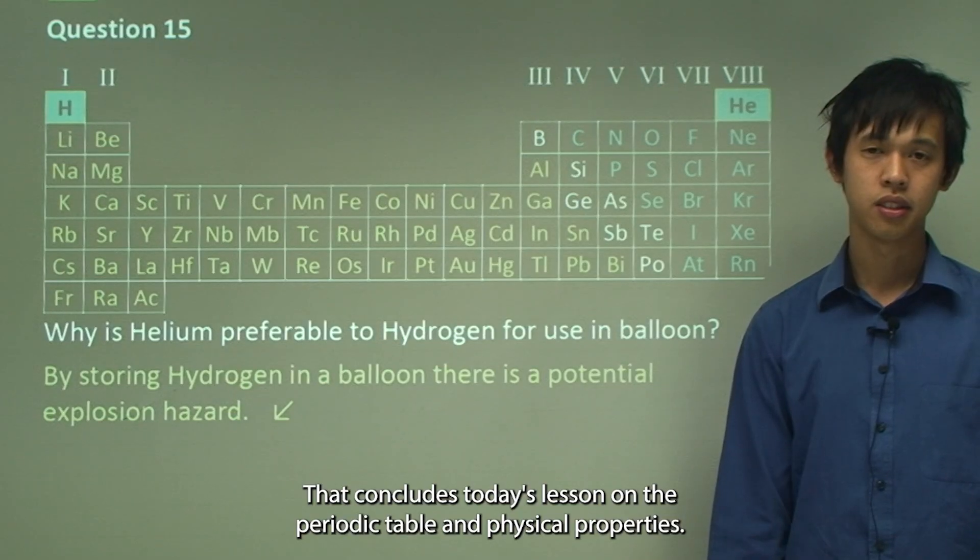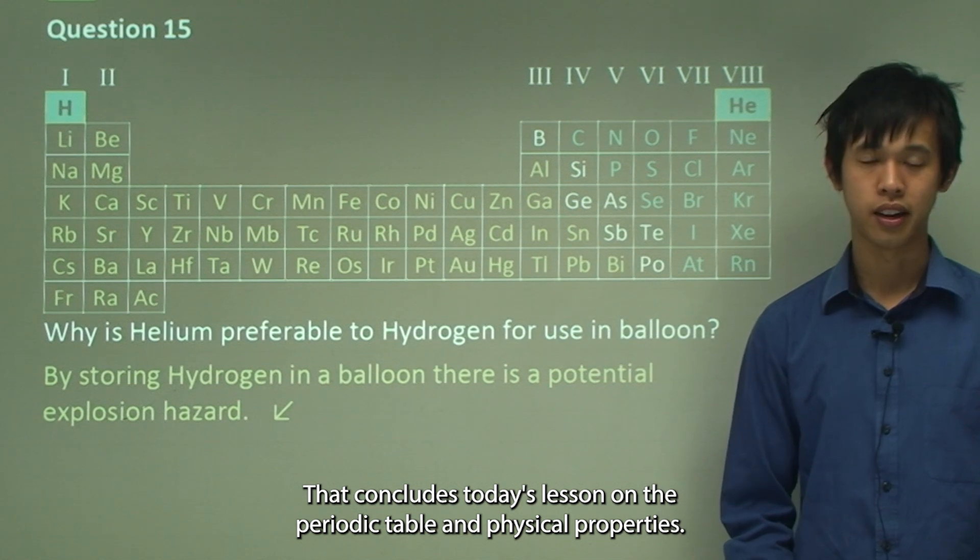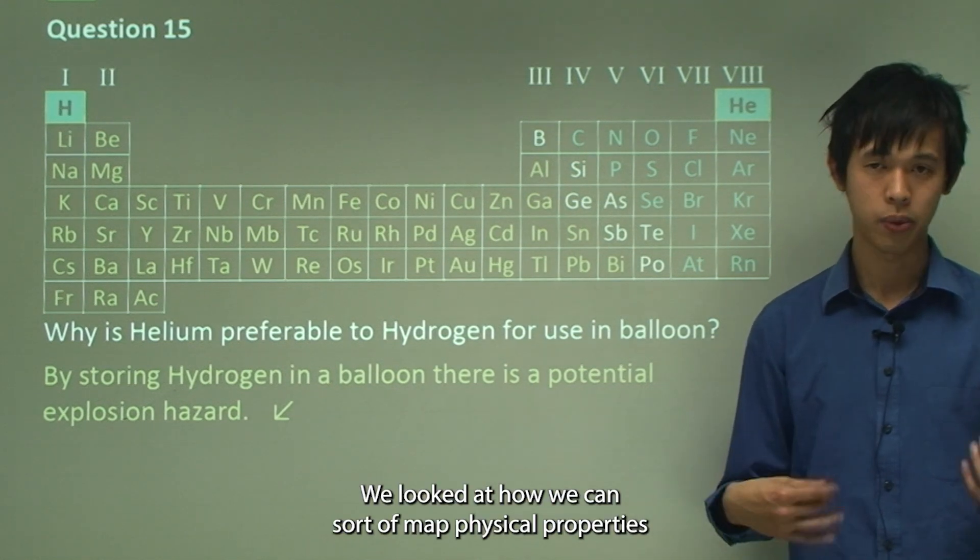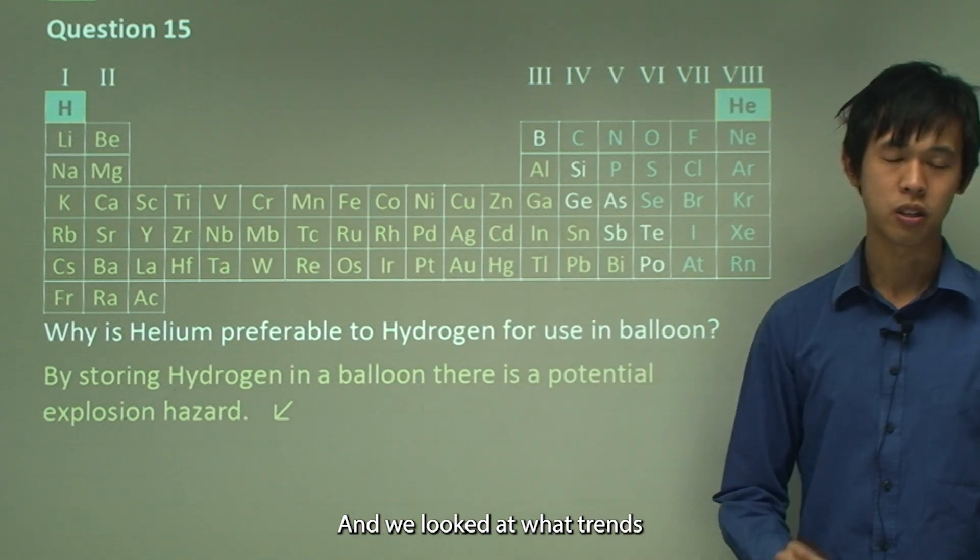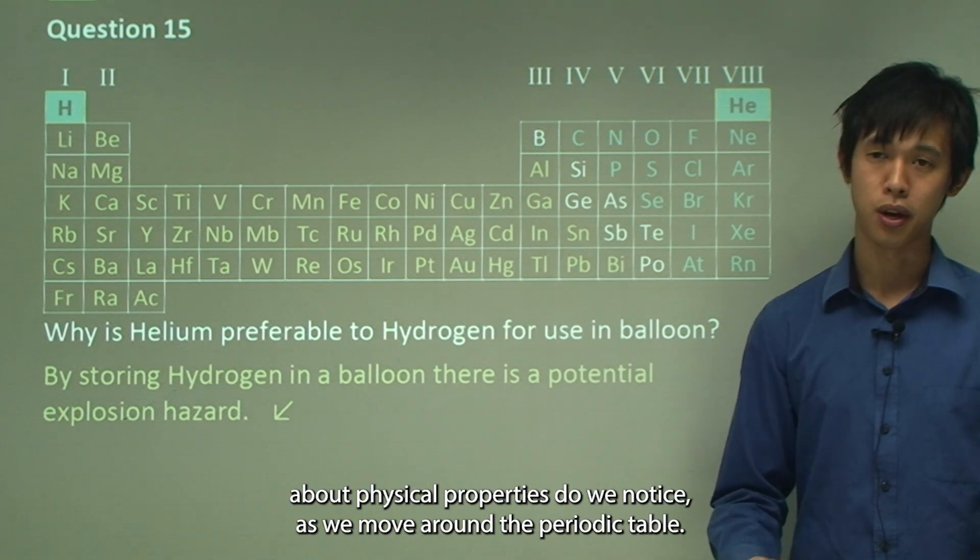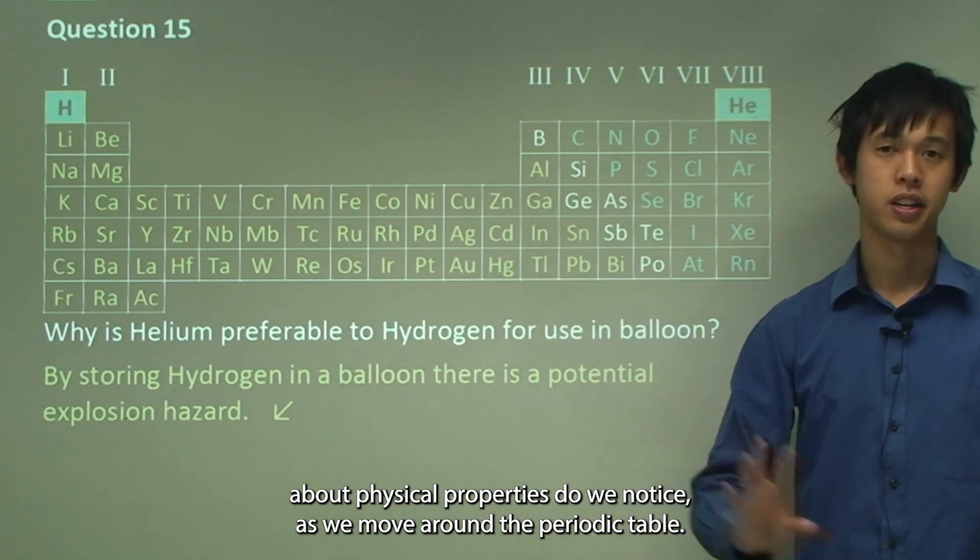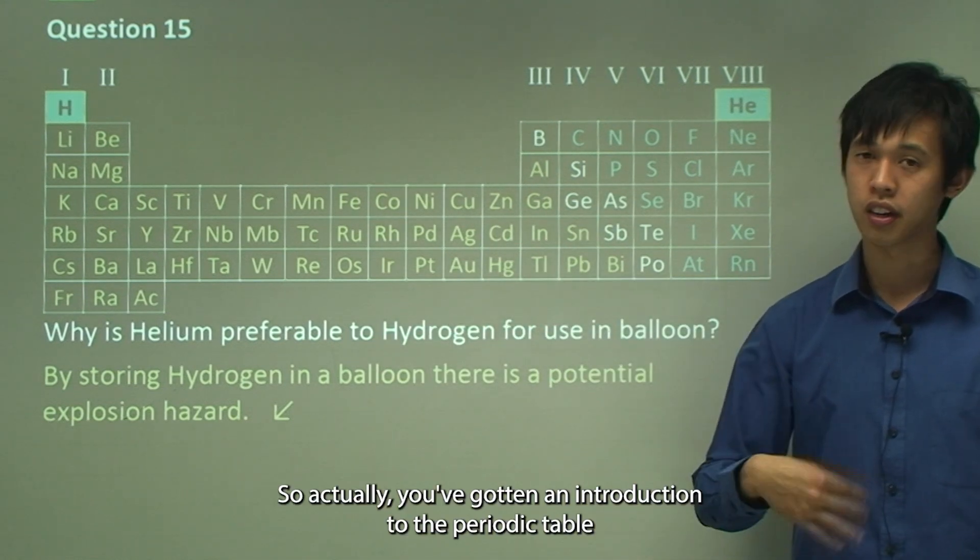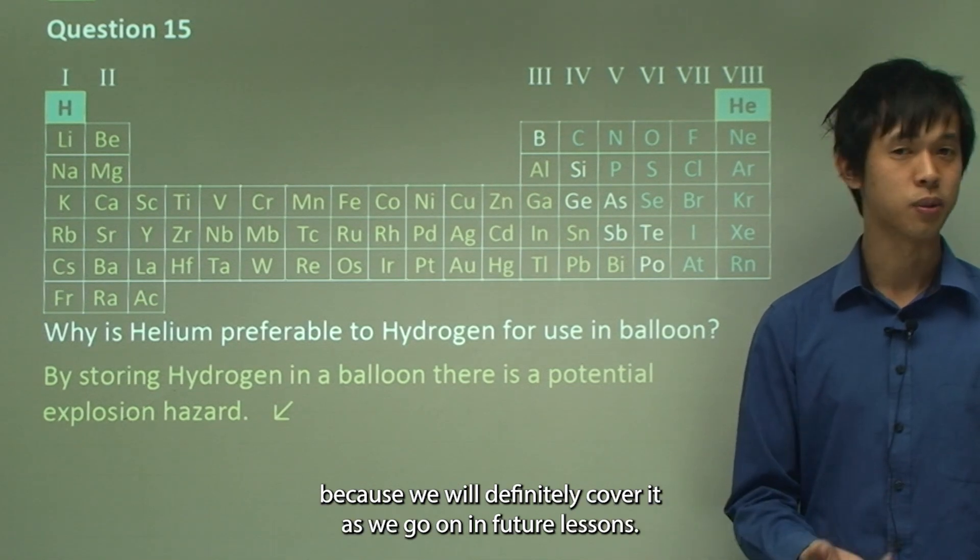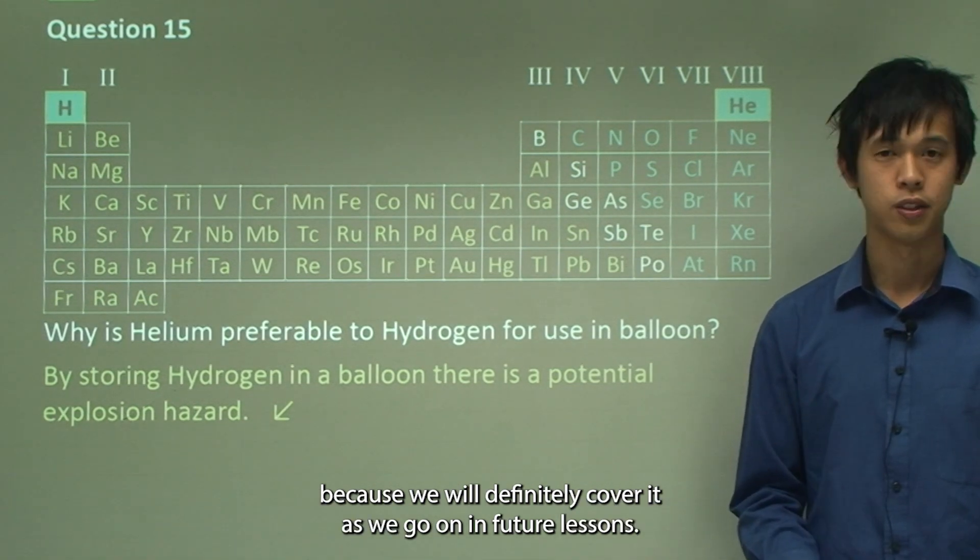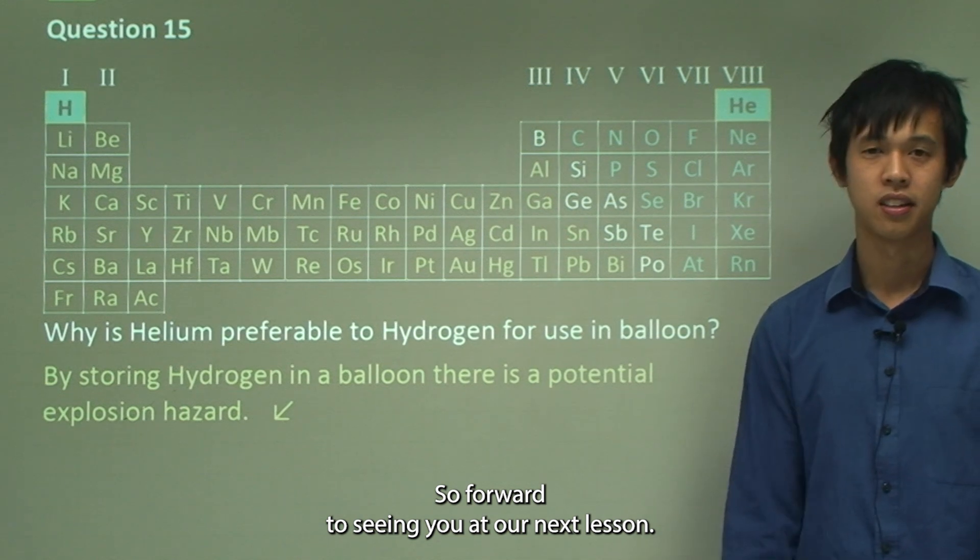That concludes today's lesson on the periodic table and physical properties. We looked at how we can map physical properties onto the periodic table and we looked at what trends about physical properties do we notice as we move around the periodic table. Hopefully you've gotten an introduction to the periodic table and are interested in learning more about it because we'll definitely cover it as we go on in future lessons. Look forward to seeing you at our next lesson.